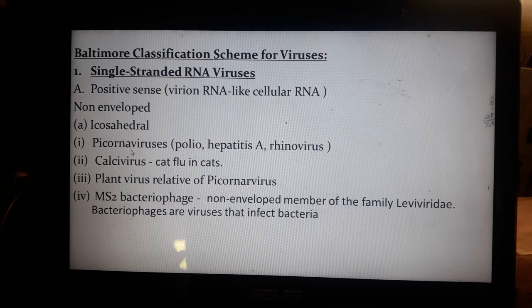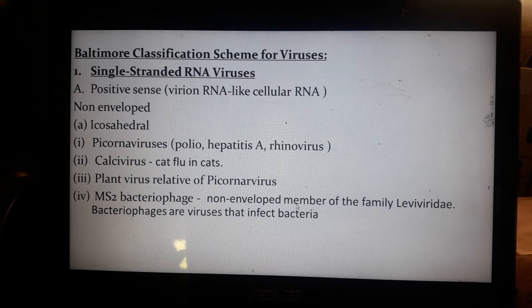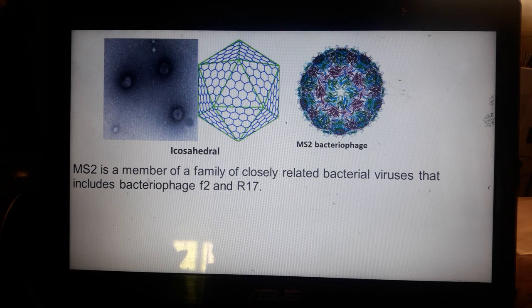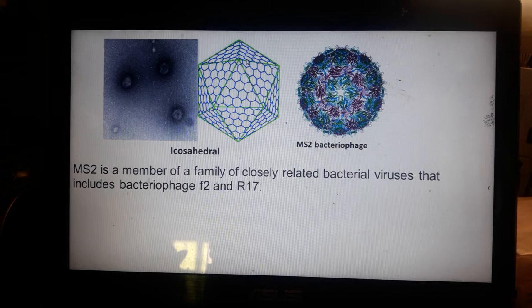Non-enveloped icosahedral positive-sense viruses include the picornaviruses — poliovirus, hepatitis, rhinovirus, and calicivirus. MS2 is a non-enveloped member of the family Leviviridae. Bacteriophages are viruses that infect bacteria — MS2 is a bacteriophage that infects Escherichia coli, and is closely related to bacterial phages f2 and R17.